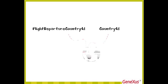In our case, we will define the FlightDepartureCountryId attribute as a subtype of CountryId. From there, GeneXus will consider FlightDepartureCountryId exactly as if it were CountryId, identifying it as a foreign key in the flight transaction, and the relation with Country will be established just as we intended.